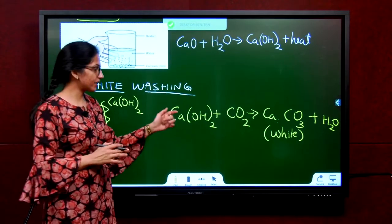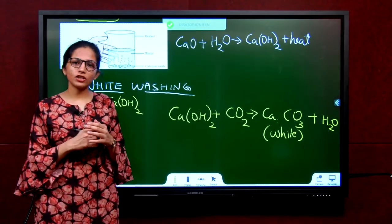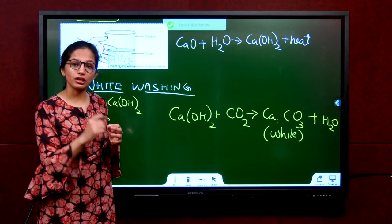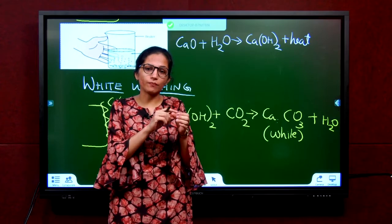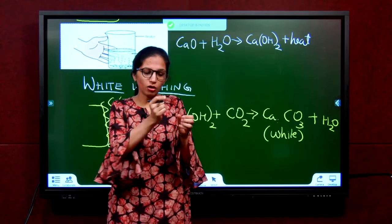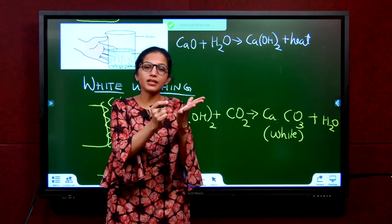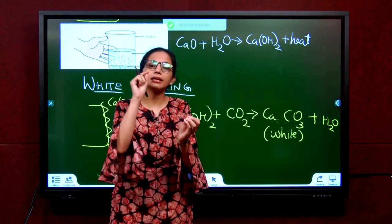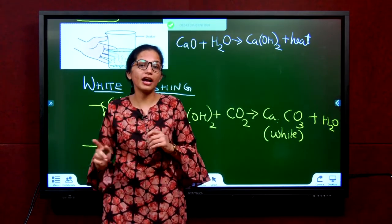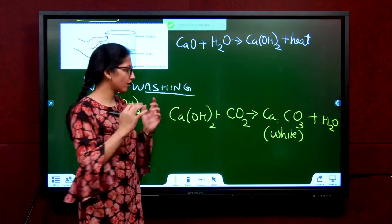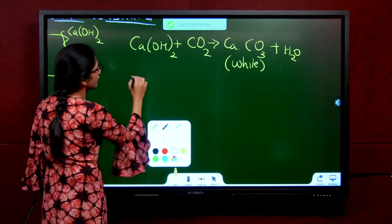This same reaction is also used as a test for carbon dioxide. In the previous section, we learned how to test for hydrogen: bring a matchstick close to the mouth of the test tube — if the gas burns with a pop sound, it is hydrogen. Now, the test for carbon dioxide: pass the gas through a solution of calcium hydroxide. If the solution turns milky, the gas evolved is carbon dioxide.